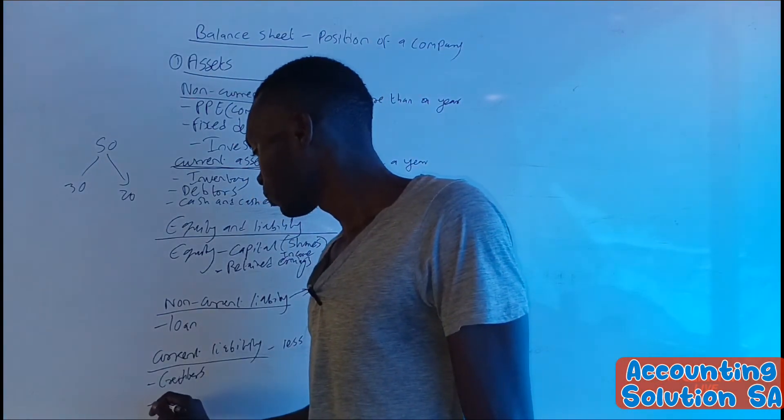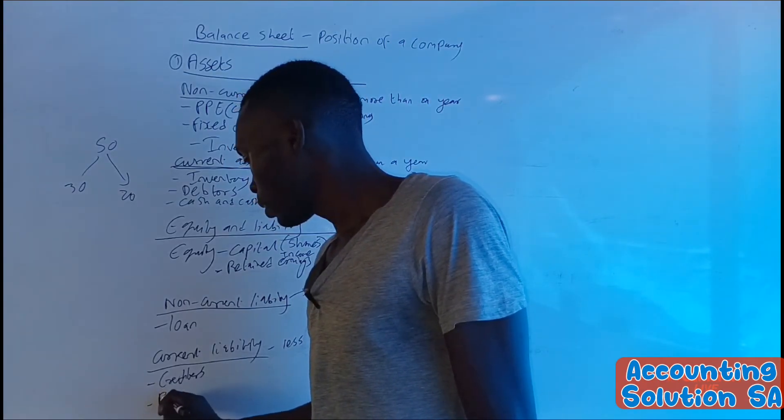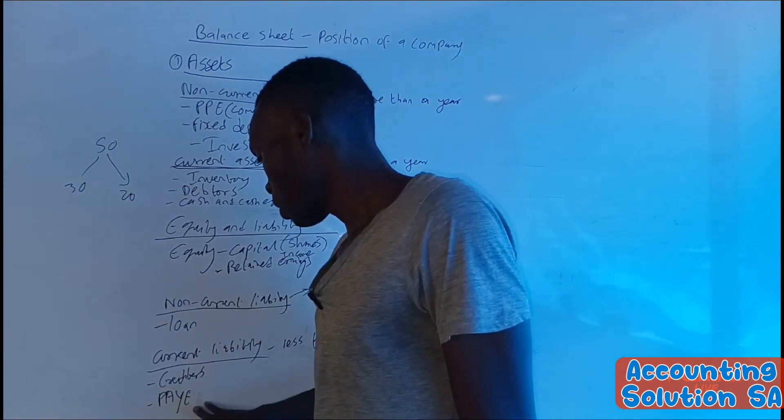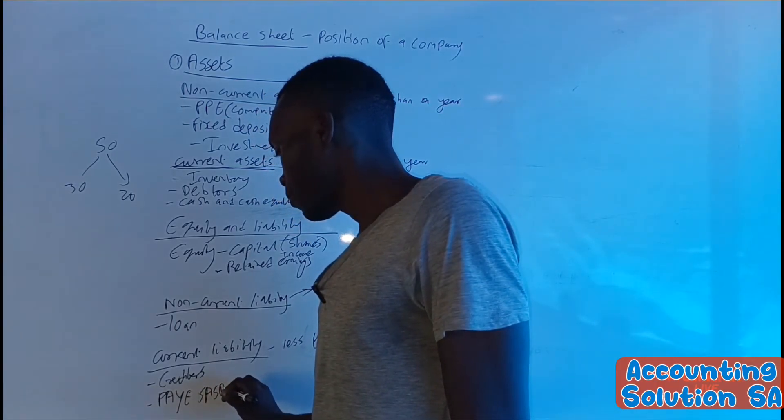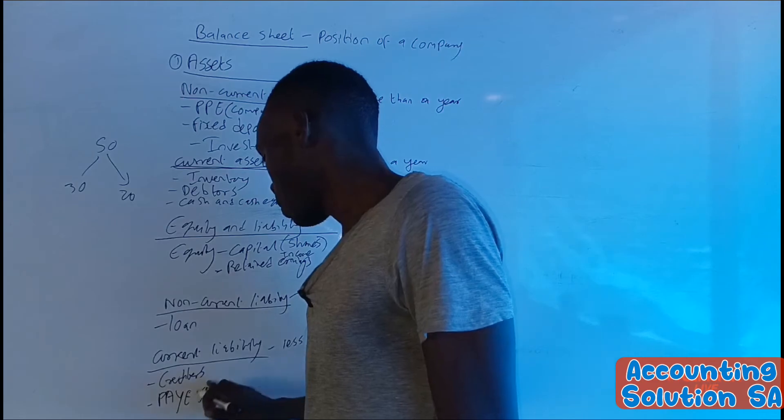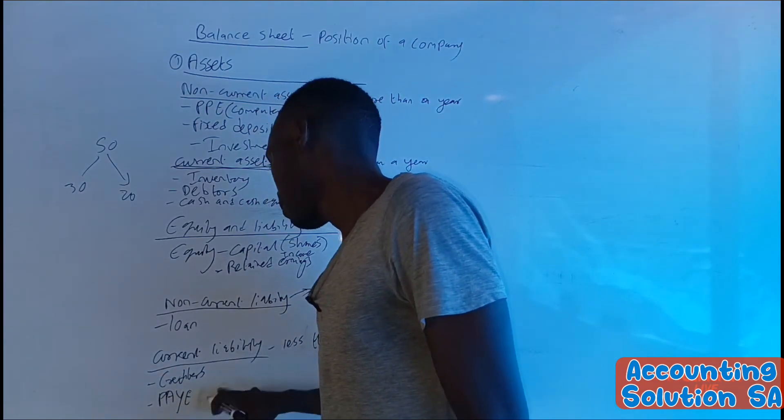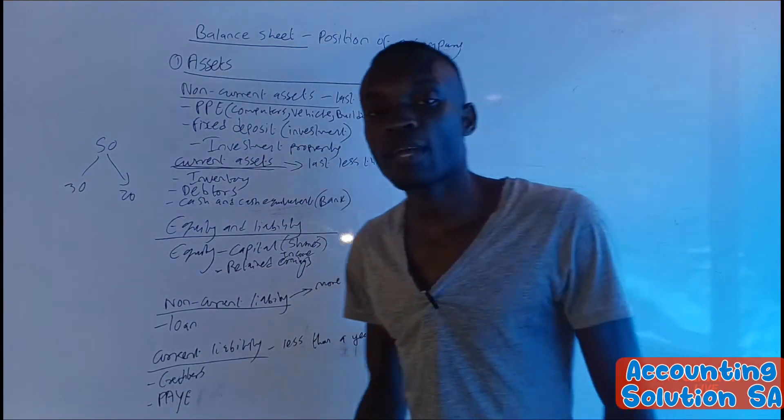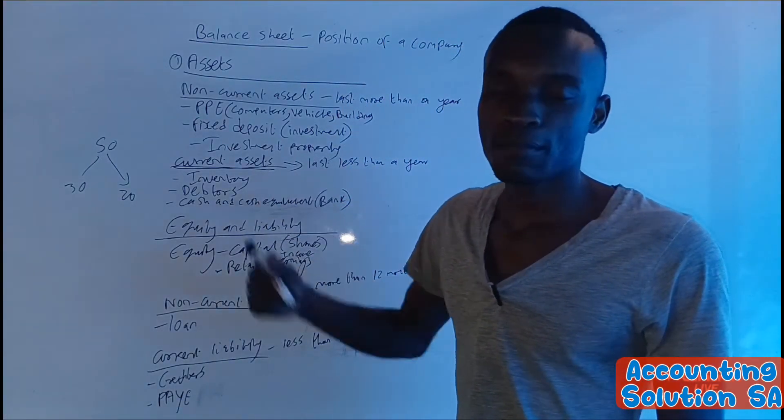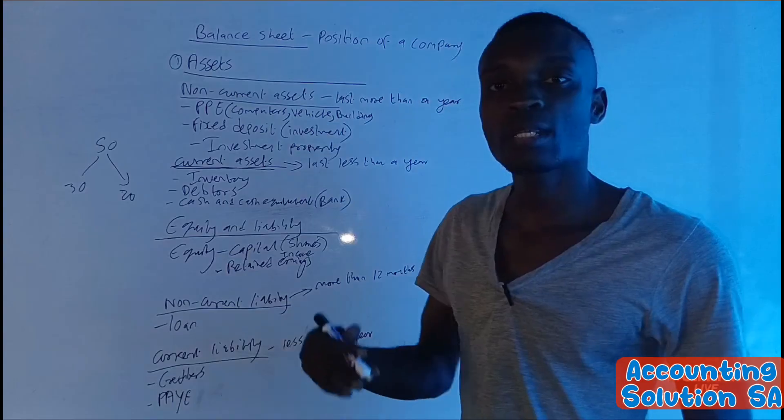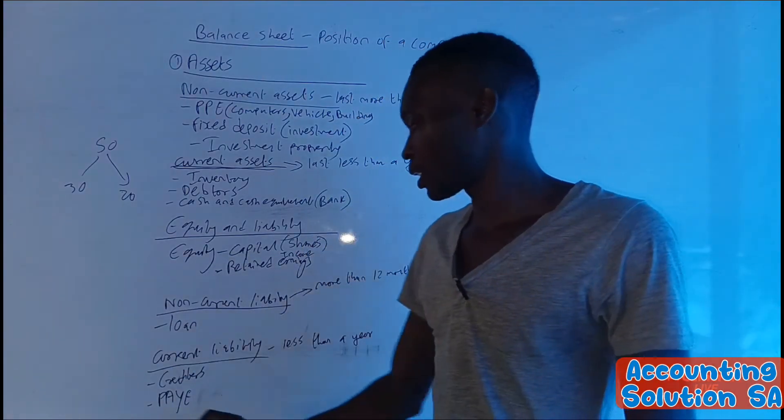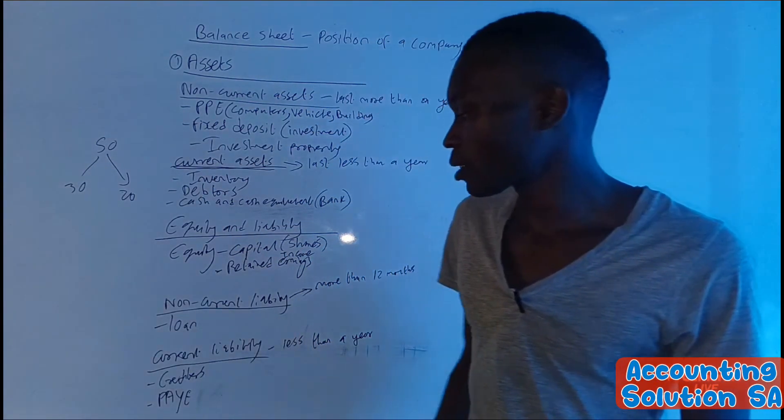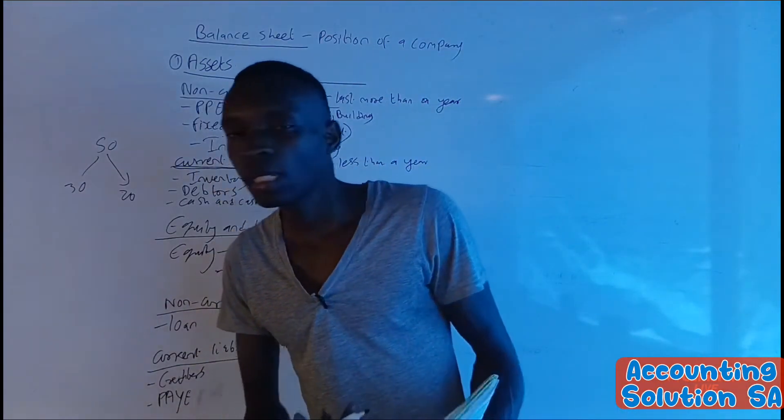We can also have PAYE or PAYE in sources. This is the tax that we collect from our employees. We can just say PAYE, because when we say SARS, it's going to be related to South Africa only. We have a tax that we collected from our employees, then we call it PAYE, and we have to pay it to the government within 12 months. Then after that we can also have tax liability. It also falls under current liability, because we have to pay it within 12 months.